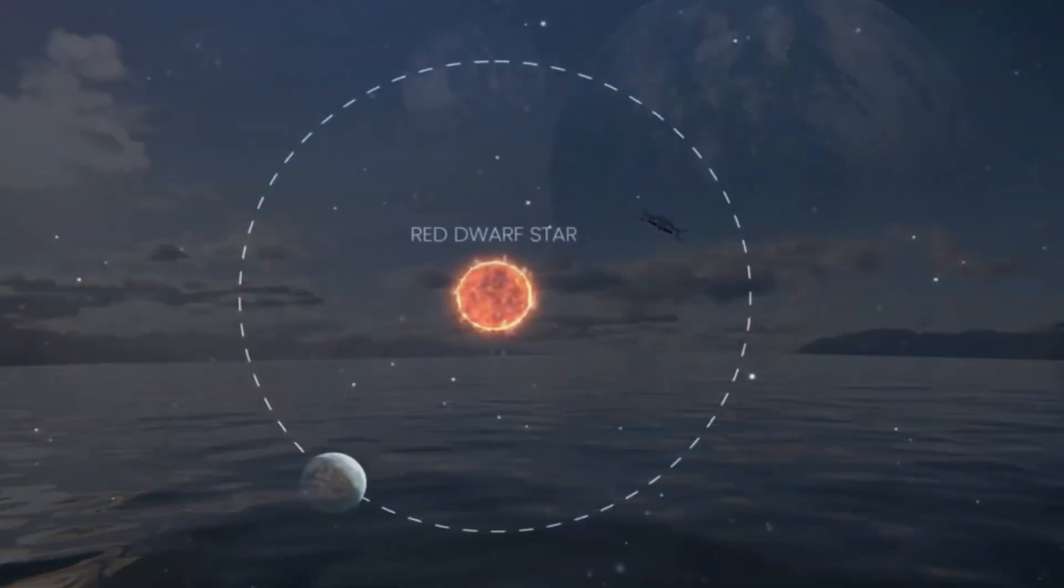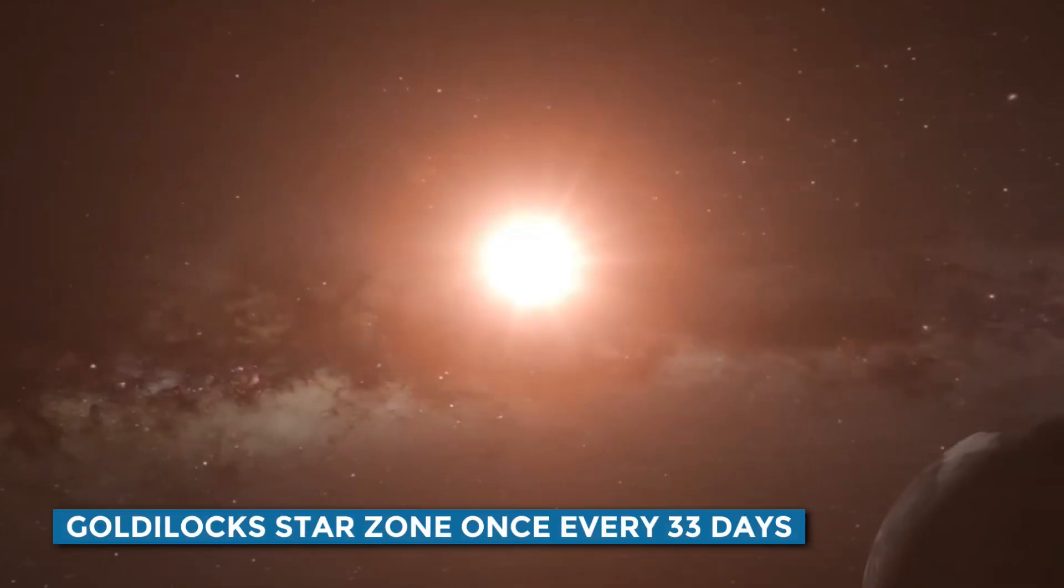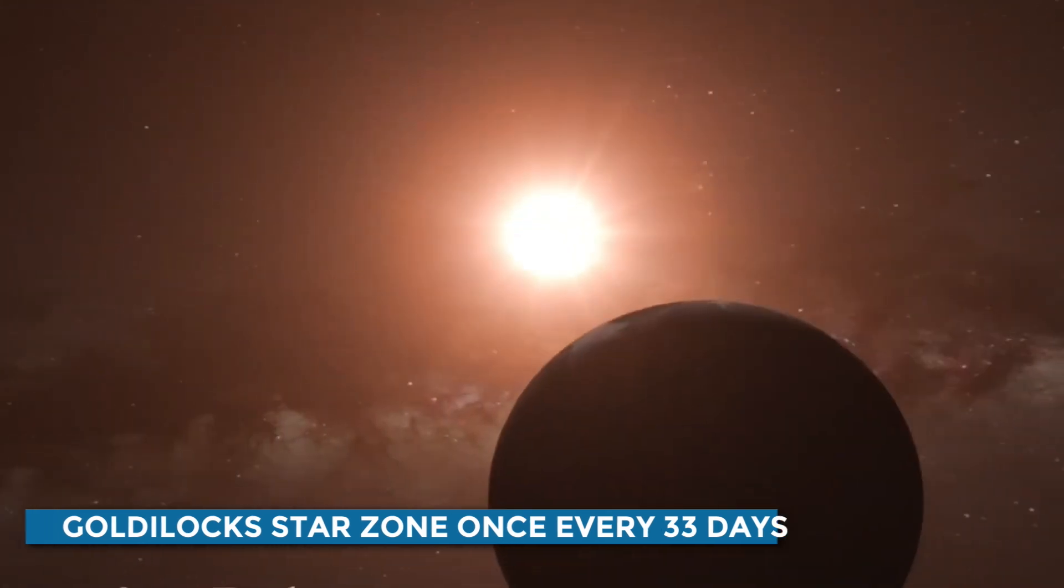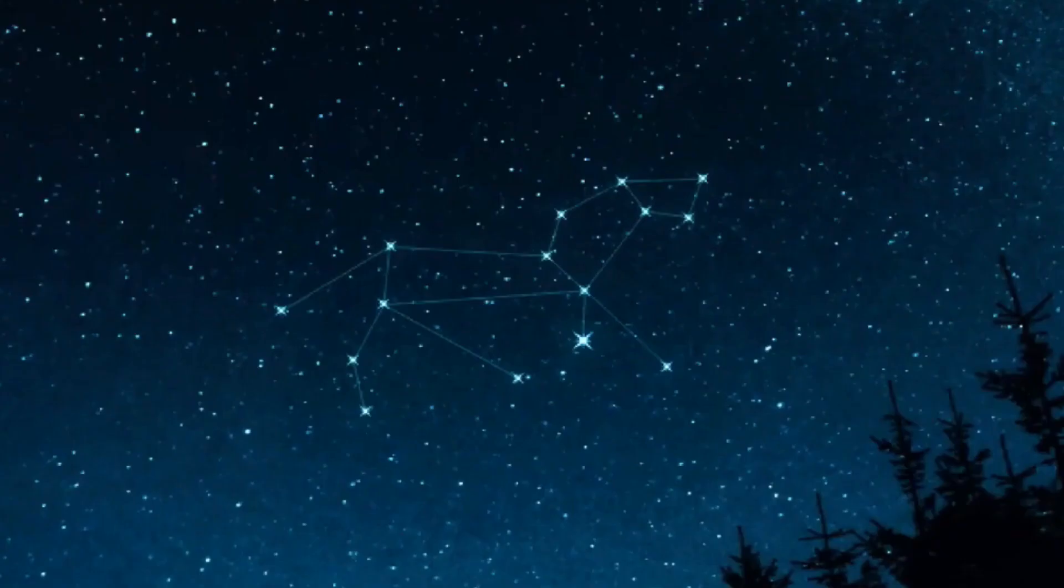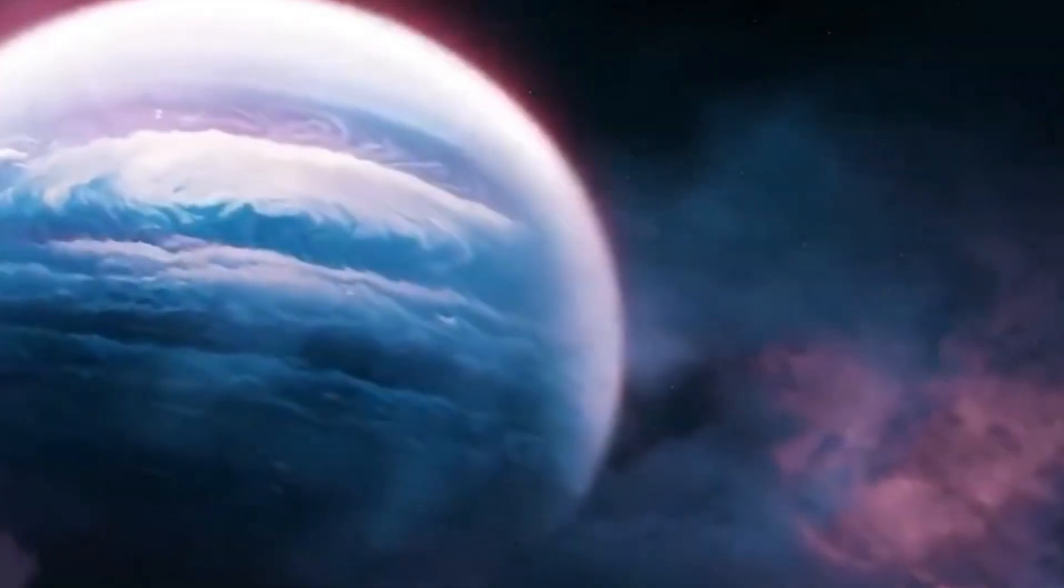K2-18b is known to orbit a red dwarf star within the Goldilocks zone once every 33 days. Scientists believe the Goldilocks star's stellar radiation might be why it possesses liquid water, but it's unclear.